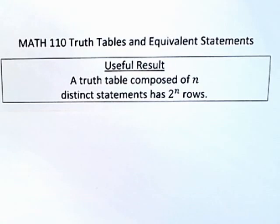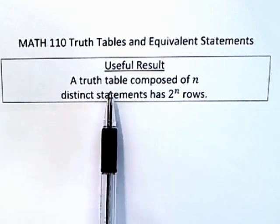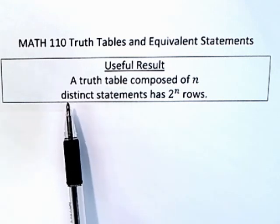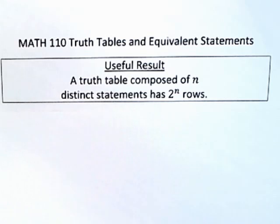When we're doing examples, it's nice to be able to know how many rows you're going to have. We can do that very easily with this useful result. It simply says a truth table with n distinct statements has 2^n rows. Very simple concept, so let's make sure you have it by working a few problems.